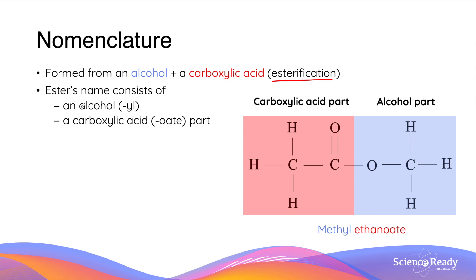The name of the ester consists of two parts: the alcohol part, which ends with the 'yl' suffix, and the carboxylic acid part, which ends with an 'oate' suffix. In the molecule of an ester, the carboxylic acid part refers to the side of the ester molecule that contains the carbonyl group, while the alcohol part is on the other side of the molecule containing the oxygen atom that forms a single bond with the carbonyl carbon.